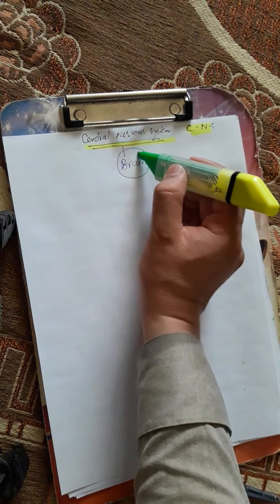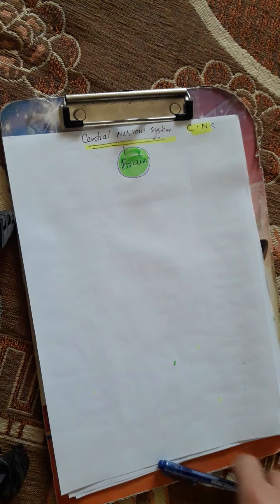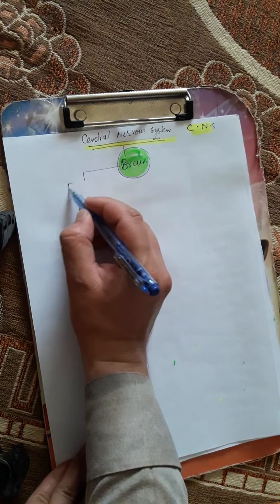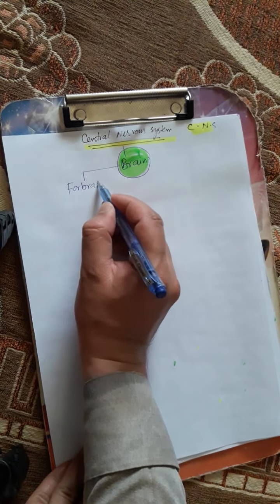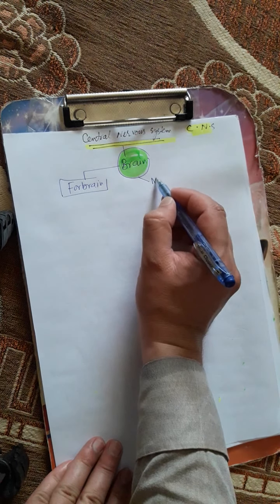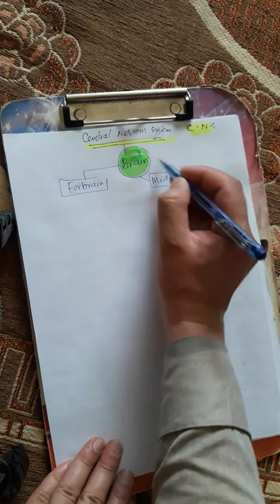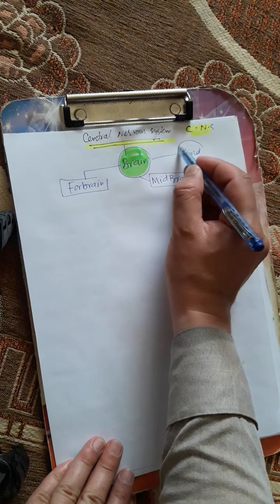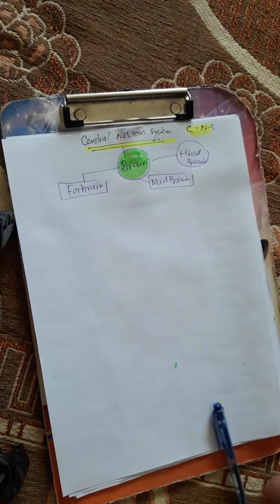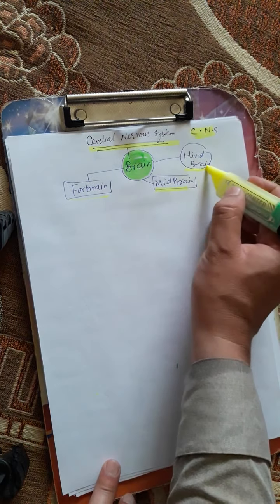In the brain, we have three parts. The brain has three parts. The first one is the forebrain. The second is the midbrain. And the third one is the hindbrain. So the brain has three parts: forebrain, midbrain, and hindbrain.